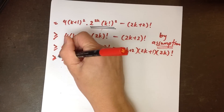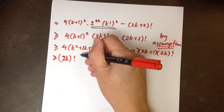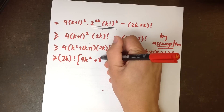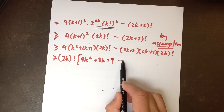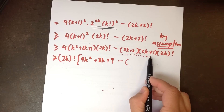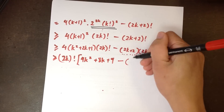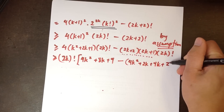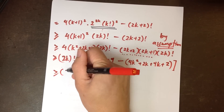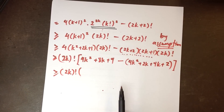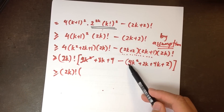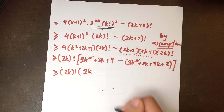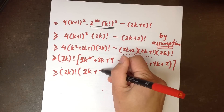Putting 2k factorial at the front: four lots of k plus 1 squared gives 4k squared plus 8k plus 4. Then I subtract the expansion: 2k plus 2 times 2k plus 1 gives 4k squared plus 2k plus 4k plus 2, which is 4k squared plus 6k plus 2. The 4k squared terms cancel. I have 8k minus 6k which is 2k, and 4 minus 2 which is 2. So I'm left with 2k factorial times 2k plus 2k plus 2.